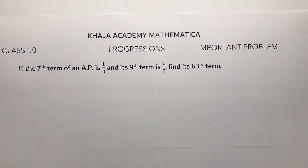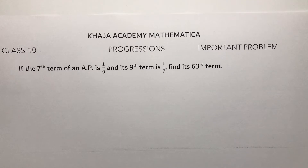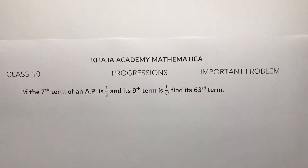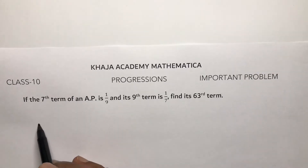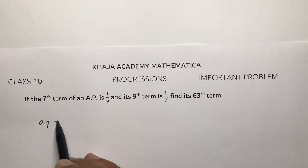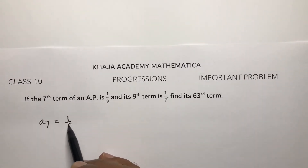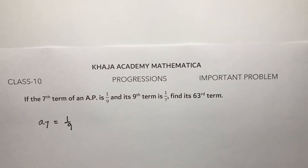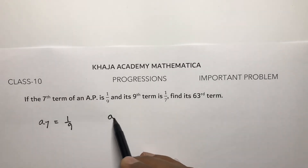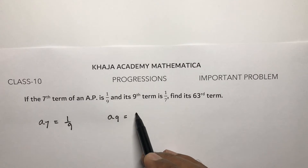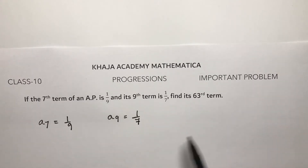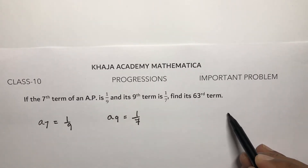Last tenth important problem from progressions. If the seventh term of an AP is 1/9 and its ninth term is 1/7, find its 63rd term. So here they gave seventh term of an AP: a7 is 1/9 and ninth term a9 is 1/7, and we need to calculate a63.